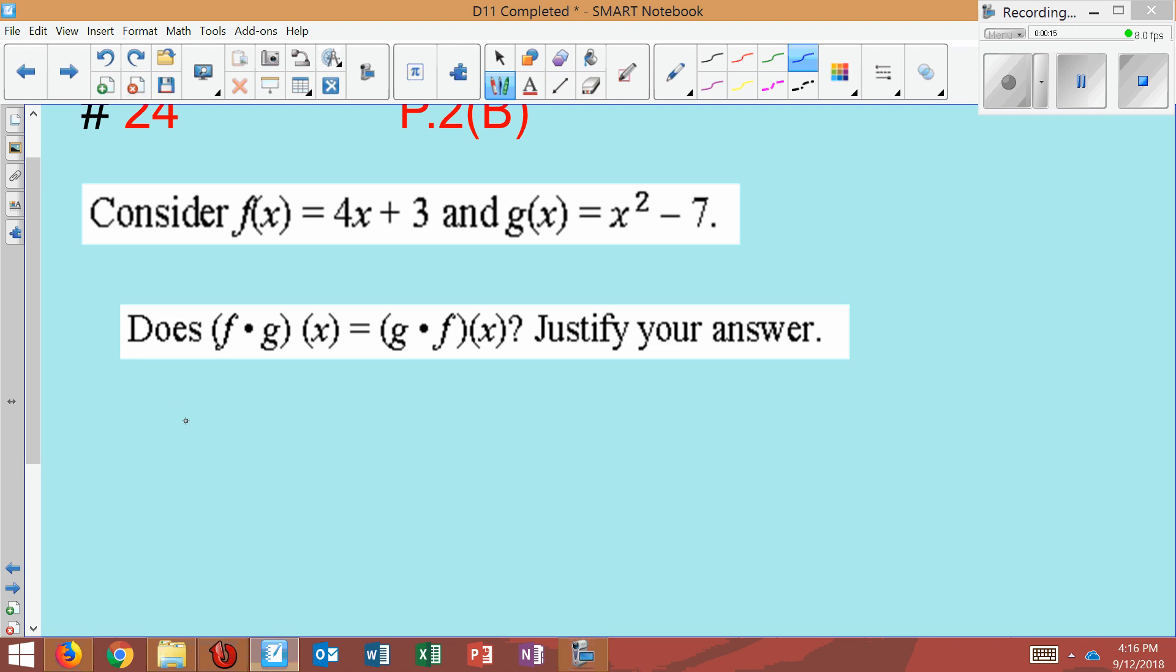Well, I'm going to write here f dot g is going to be equal to, and I'll substitute for f, I'm going to have 4x plus 3. And that's going to multiply times the g's equation, which is x squared minus 7. I have two parentheses next to each other, multiplying.